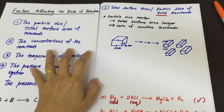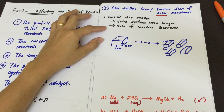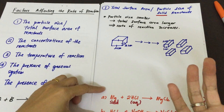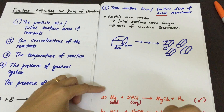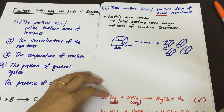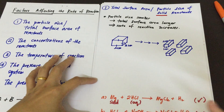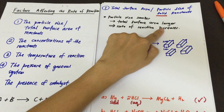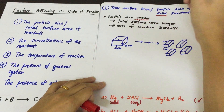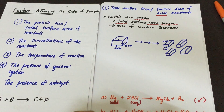Now you understand how to apply total surface area or particle size. When we say particle size, it can be bigger or smaller. When the particle size is smaller, it appears as powder, amorphous, or tiny pellets. If the particle size is bigger, it appears as granules or as a tape — magnesium tape, for example. When the particle size is smaller, the total surface area will be larger, and hence the rate of reaction will increase.